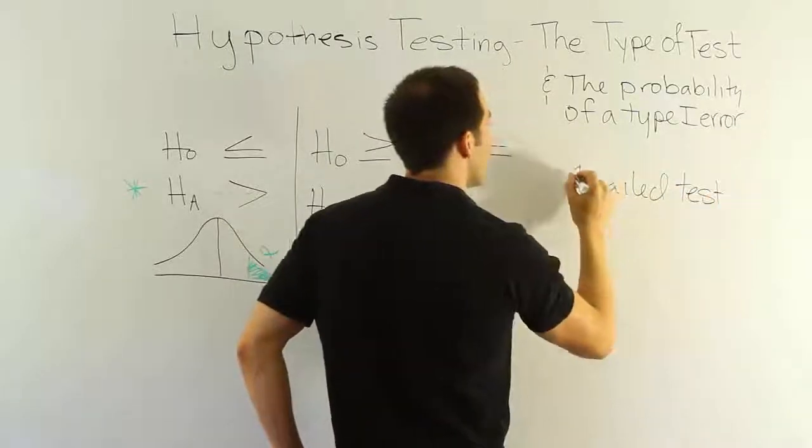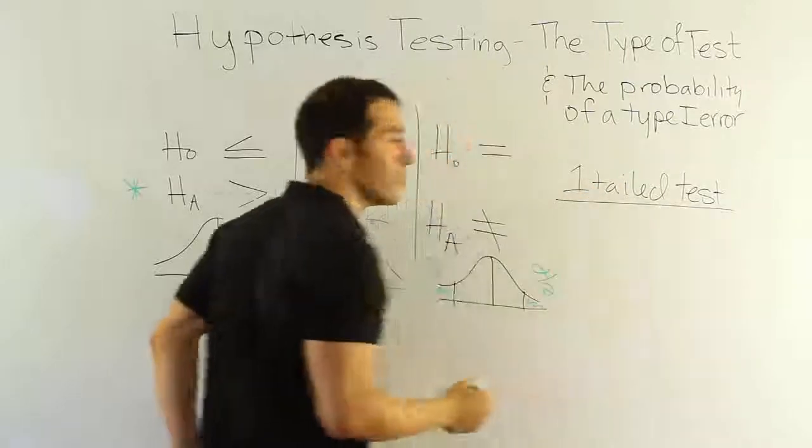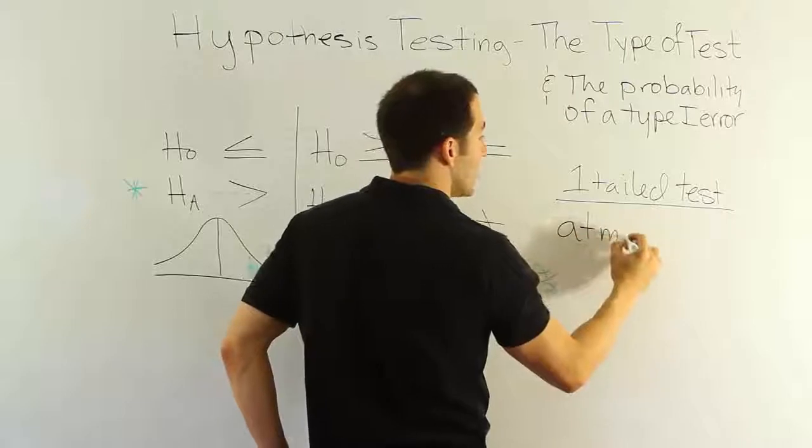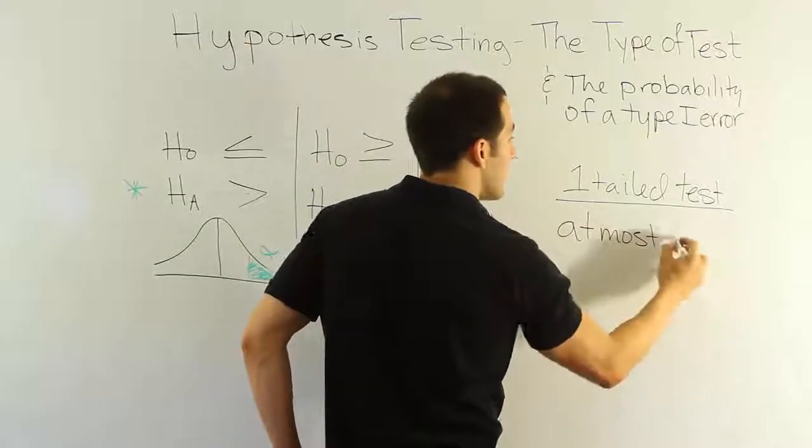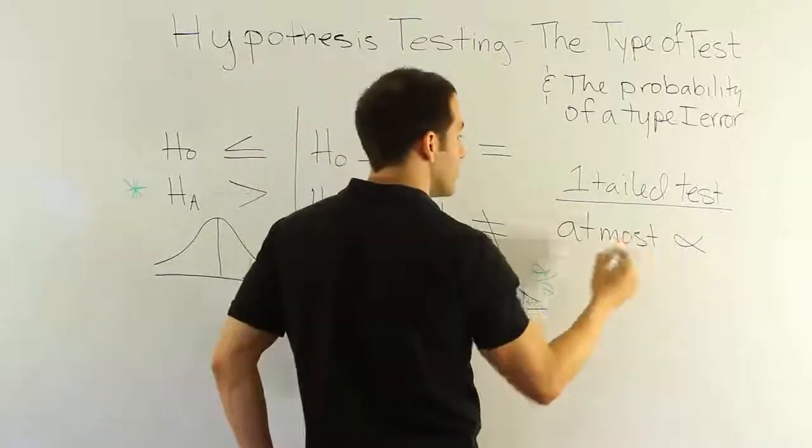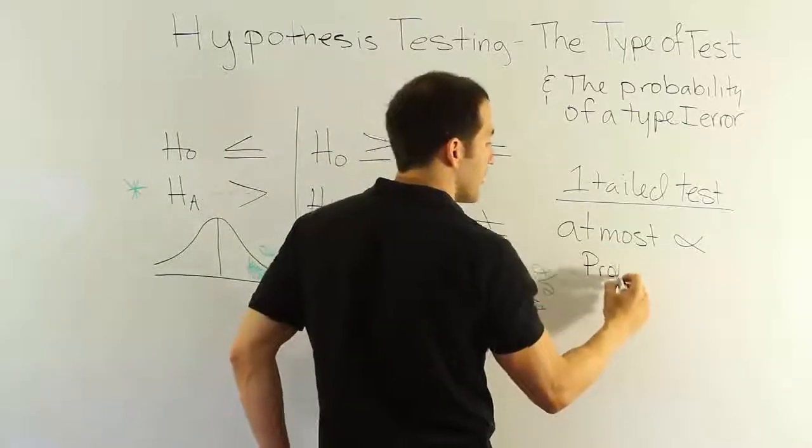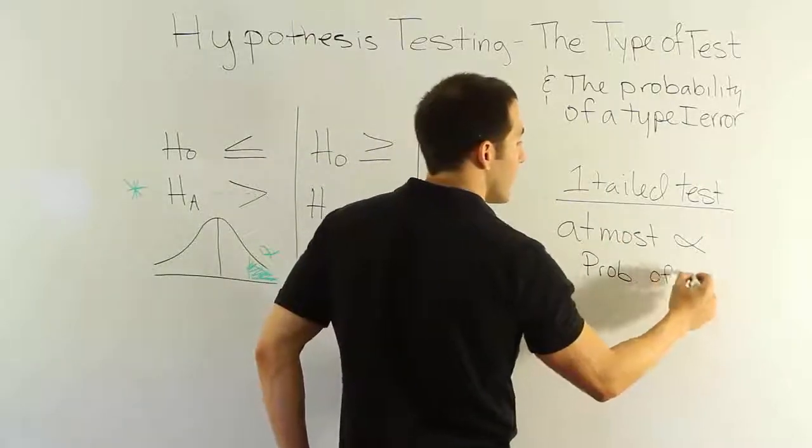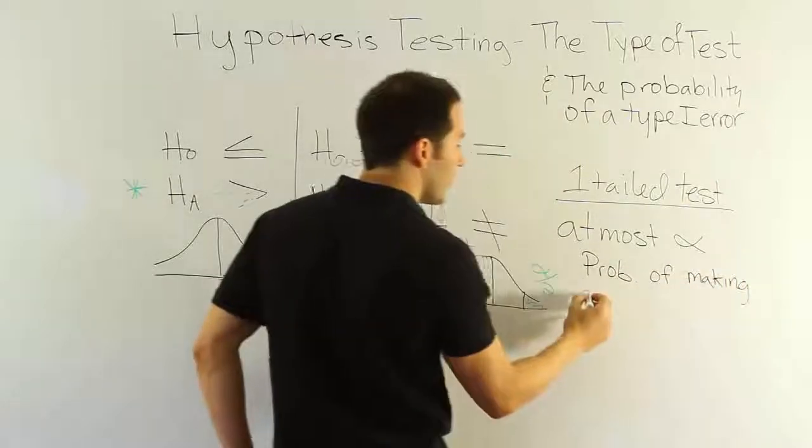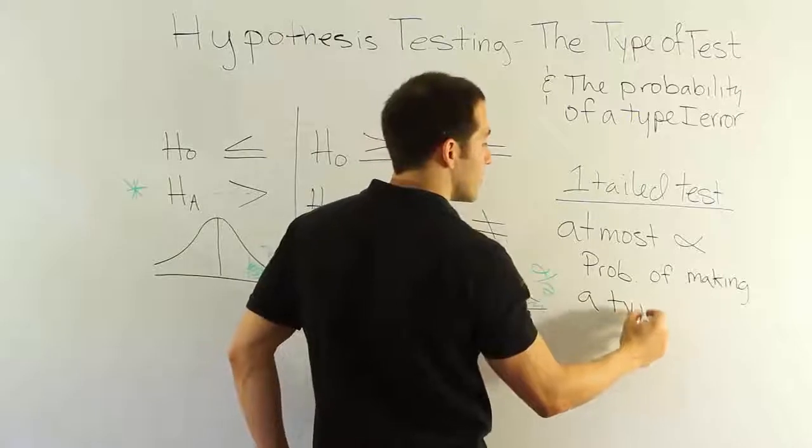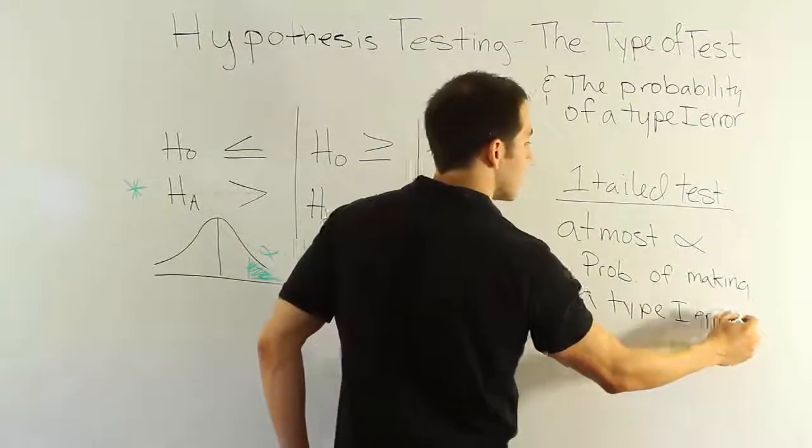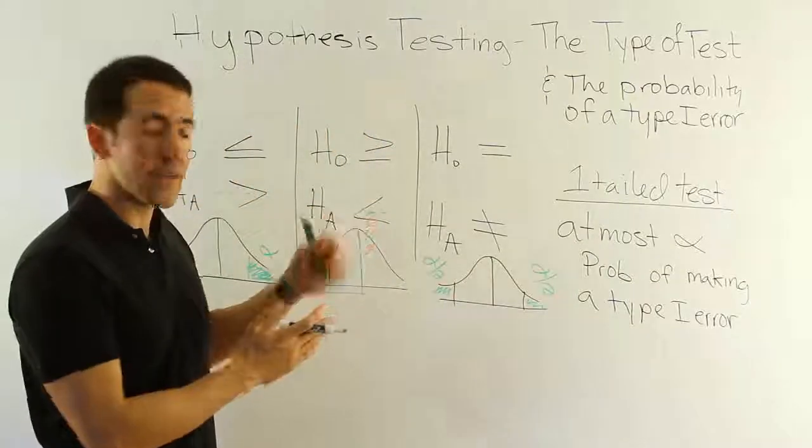For a one-tail test, the rule is essentially this: that you have at most alpha probability of committing a Type 1 error. At most alpha probability of making a Type 1 error.